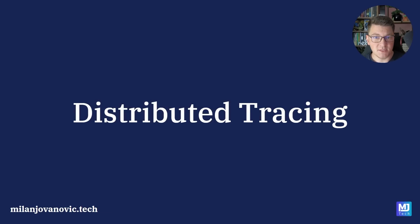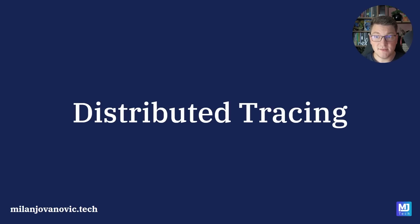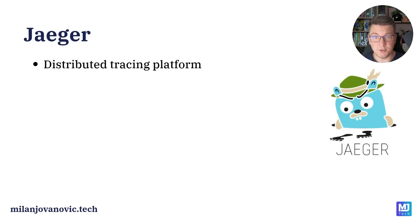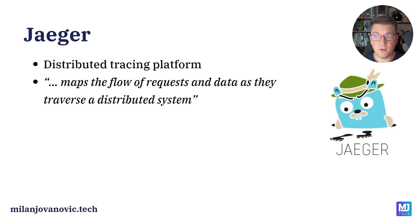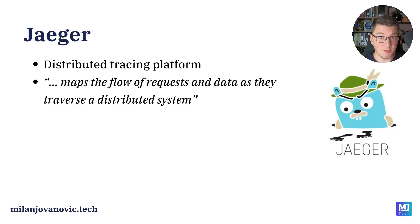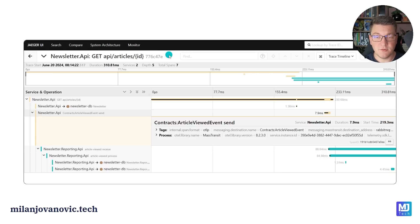This is where distributed tracing comes in. With the OpenTelemetry setup that we have in place, we will be able to track a single request flowing through our microservices system. We also want a way to visualize these distributed traces, and this is where the next component comes in — it's called Jaeger. Jaeger is a distributed tracing platform that allows us to map the flow of requests and data as they traverse a distributed system. We're going to set up Jaeger as part of our Docker Compose setup so it starts when we run our application.